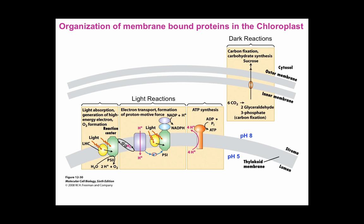The organization of the membranes of the chloroplast plays an important role in separating the location of the light reactions and the dark reactions. All the light reactions are going to be happening in the thylakoid membrane, and the dark reactions will be happening within the stroma of the chloroplasts, with some also happening within the cytosol of the cell.